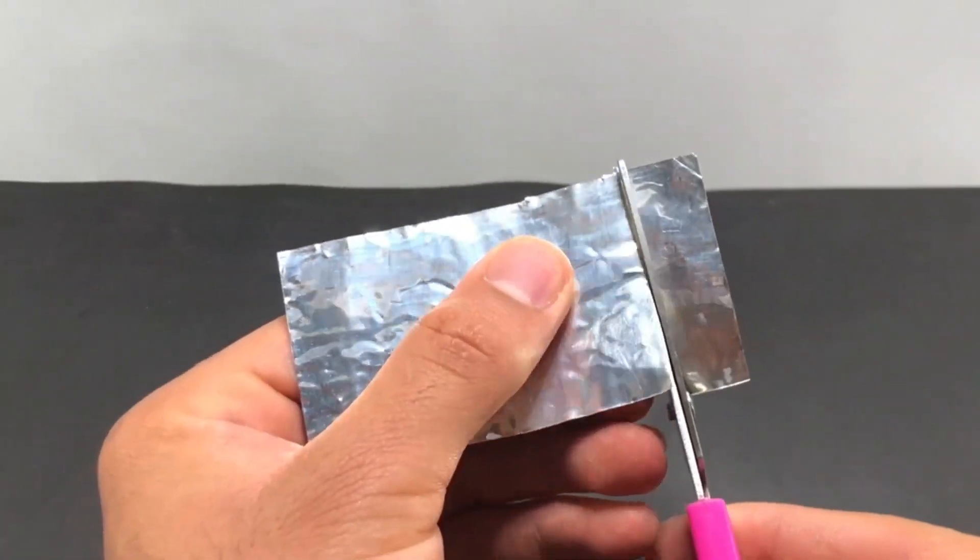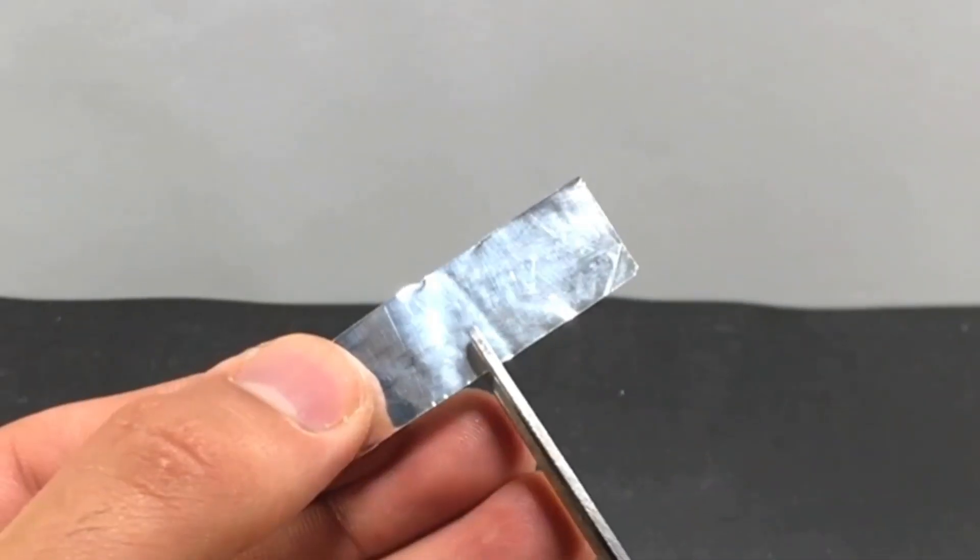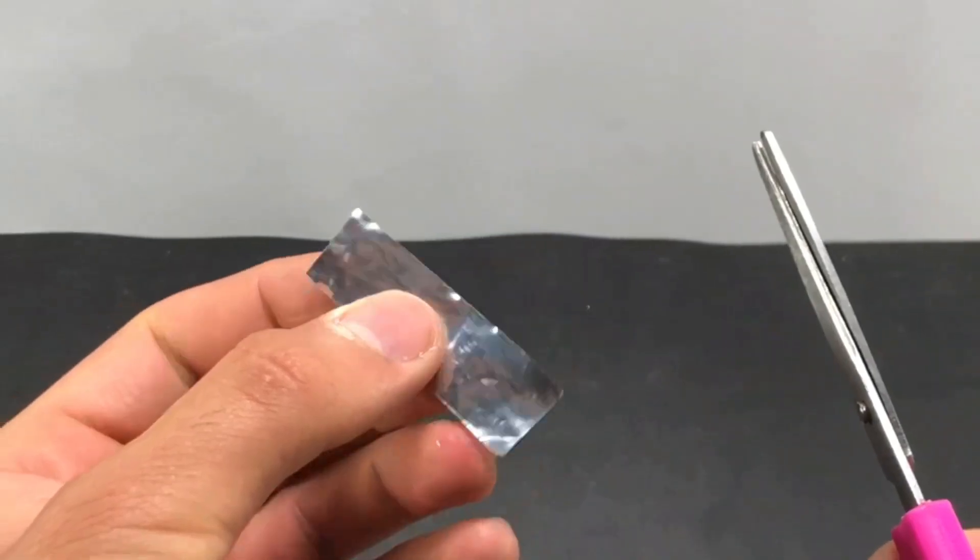We separate some of the foil. Cut the foil as shown in the video.